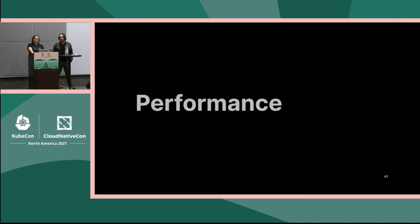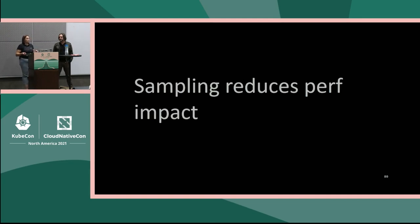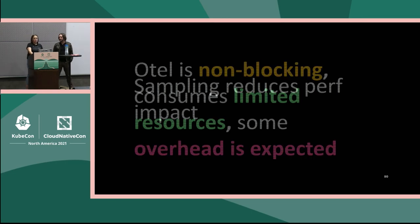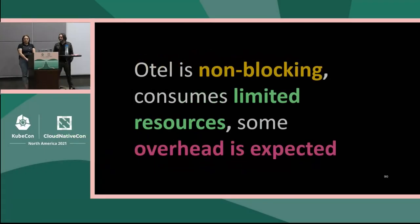Think about performance as well. The OpenTelemetry API is a no-op without a configured SDK — it's a tiny package and does not affect performance. When the OpenTelemetry SDK is configured, usually there is sampling and it reduces performance impact significantly. OpenTelemetry is non-blocking and consumes limited resources, but some overhead is expected. Benchmark your library, and if you find anything, OpenTelemetry language SDKs will be happy to help with optimizations.